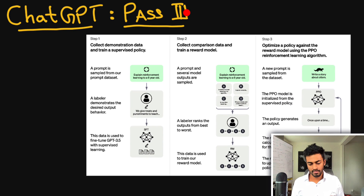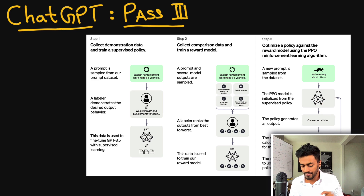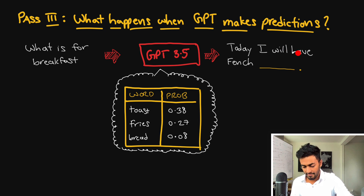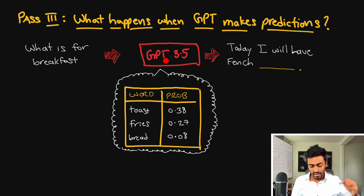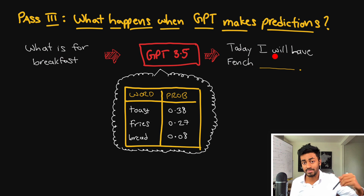In pass three, let's look more closely at how the model selects which word to generate at every time step. Every single time GPT needs to make a word decision, it produces a probability distribution over all words — a table of words and the probability that each will occur next, given the input prompt and the response generated so far.